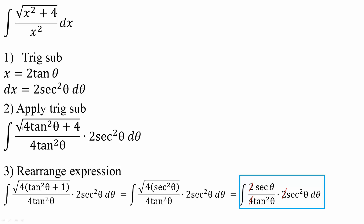So I would get the square root of 4 tan squared theta plus 4, divided by 4 tan squared theta, times 2 secant squared theta d theta. Next I will factor out a 4 to get the square root of 4 times the quantity tan squared theta plus 1.